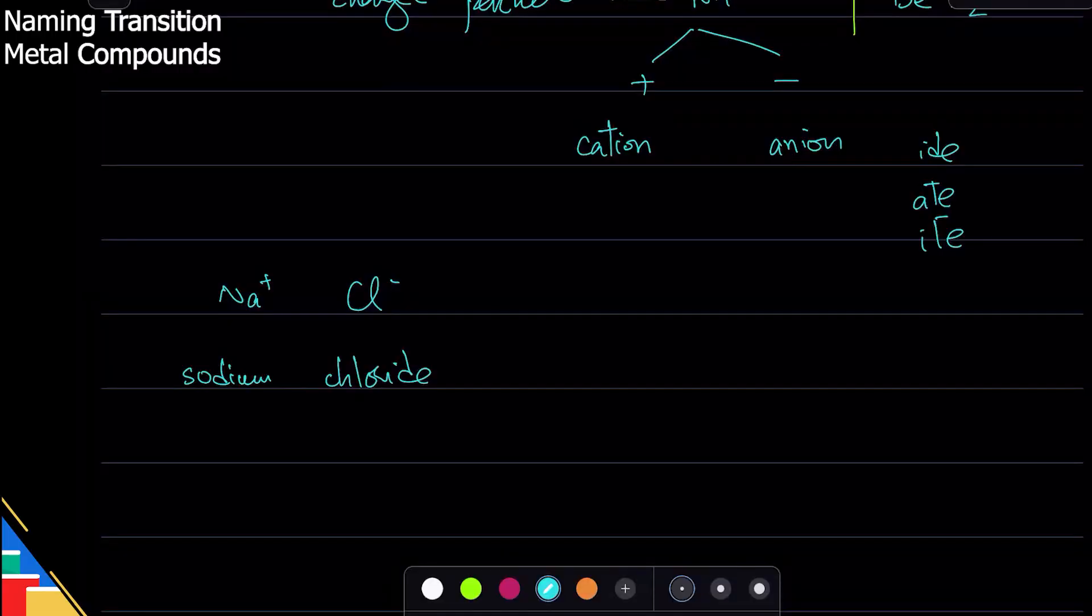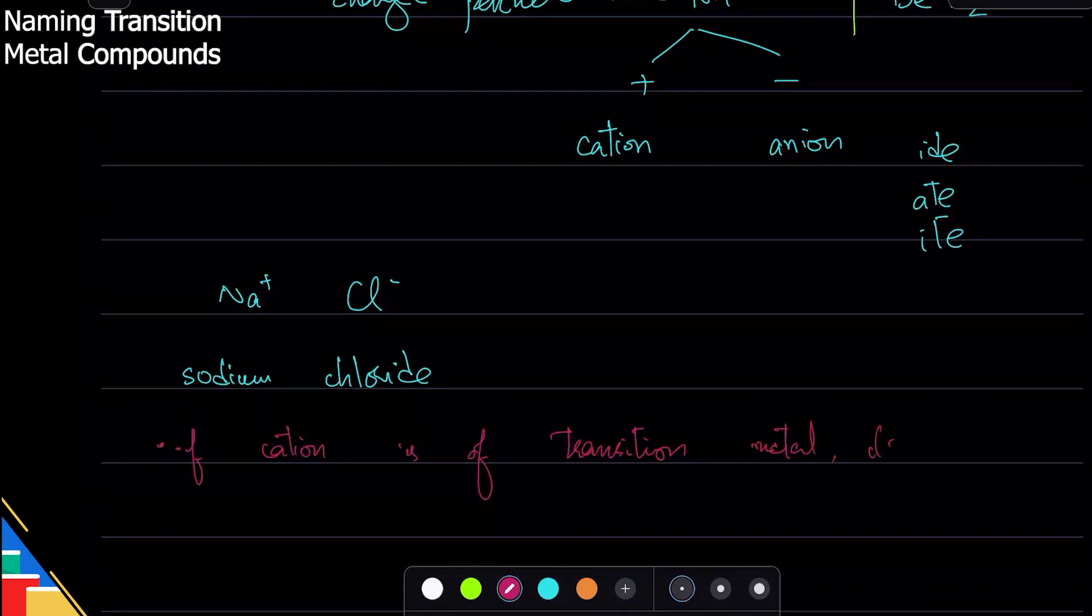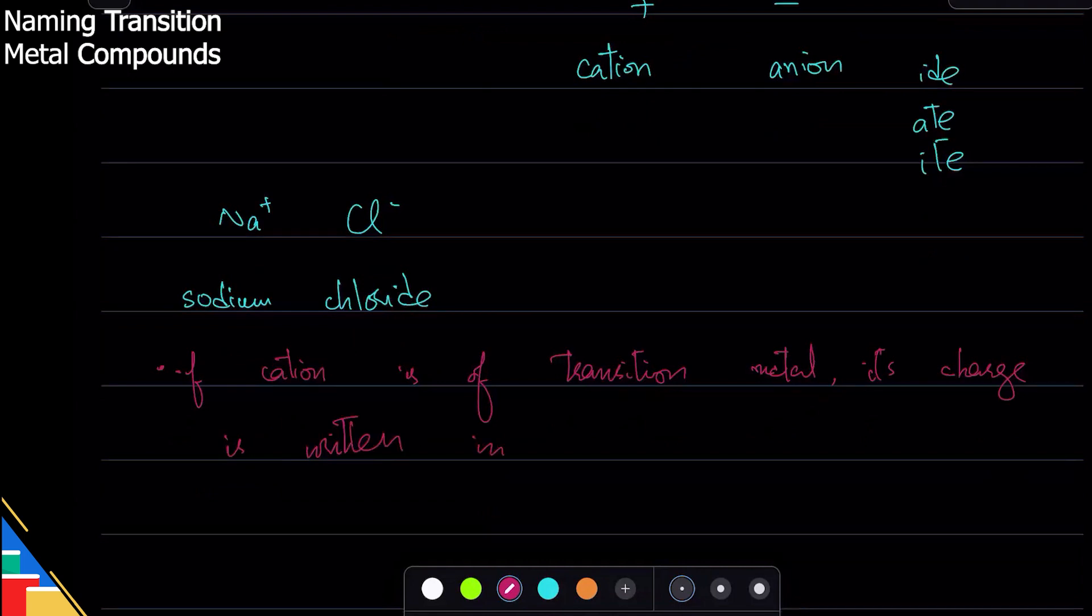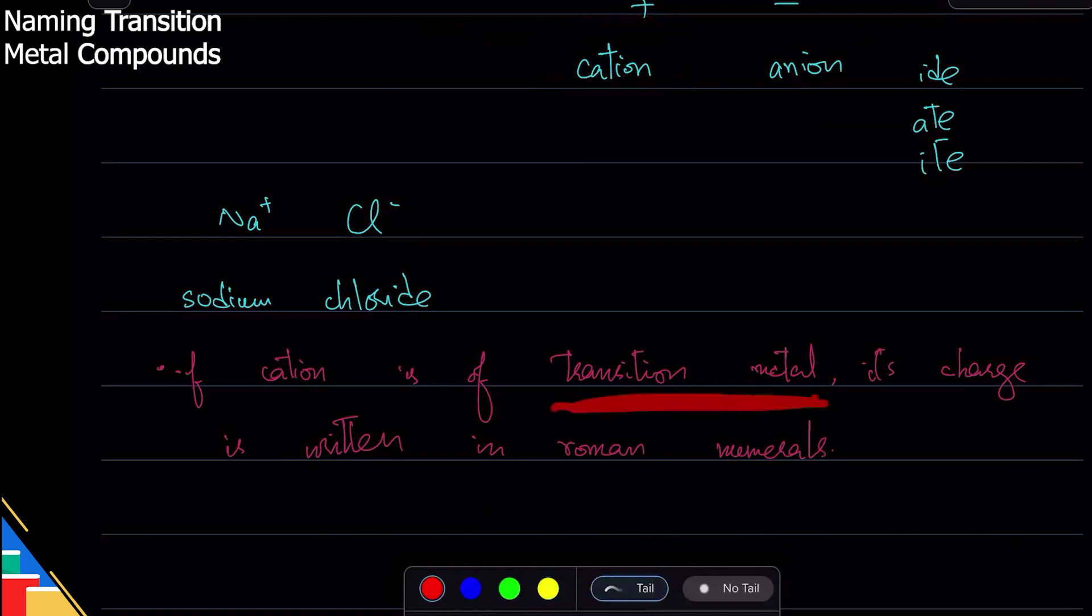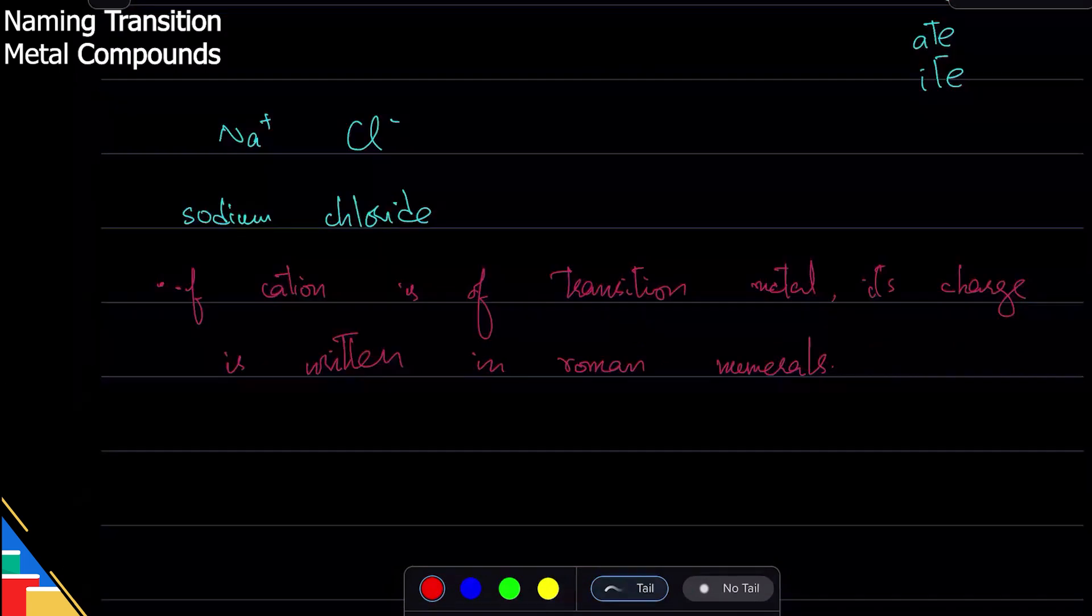How do you name cations? If a cation is a transition metal, its charge is written in Roman numerals. So for cations, there's this rule that if it is a transition metal, then you mention its charge. We do it for anions as well, but not in IGCSE and O levels. Let's take an example of this.